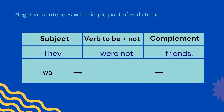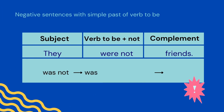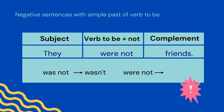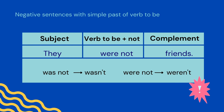To create negative sentences with the simple past of the verb to be, we will follow this structure: subject plus verb to be plus not plus the complement. For instance, they were not friends. Keep in mind the contracted forms wasn't and weren't.